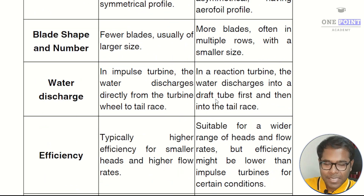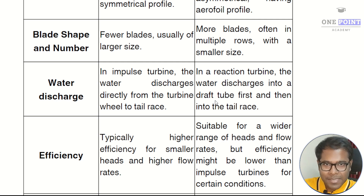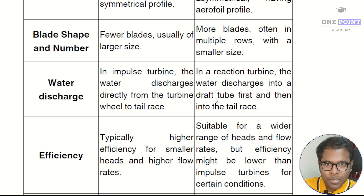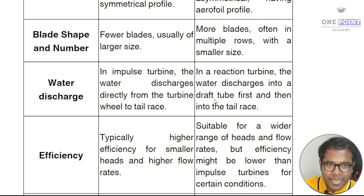The next difference is with respect to efficiency. In general, the efficiency of an impulse turbine is much higher than that of a reaction turbine and is of the order of 93 to 95 percent. If there is a lower head and higher flow rate, this efficiency can go up to 98–99 percent as well.